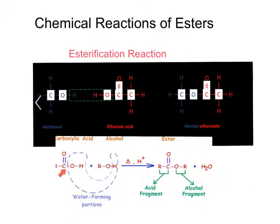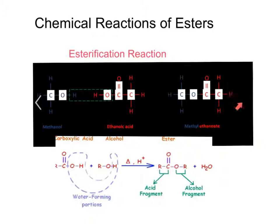Once the H and OH have broken off, that leaves the carbon and the oxygen that need to bond. They come in and bond — and I love that picture because it's color coded. You can see where the hydrogen broke off and where the hydroxide broke off, and this oxygen bonds right over to this carbon, and we result in an ester. Depending on what ester is formed, it will have some kind of fruity fragrance associated with it.